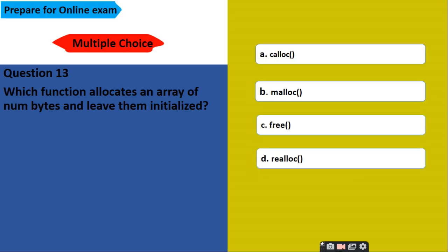Which function allocates an array of numbytes and leaves them initialized? Options are calloc, malloc, free, and realloc. So which function we are using? To allocate an array of numbytes, we are using the memory allocation function malloc. Option B is answer.